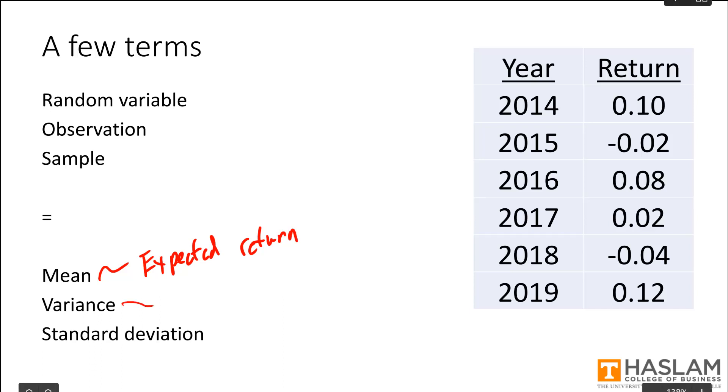Second, the variance. The variance is a measure of the dispersion of the various outcomes. So how far apart are they? Or in other words, how far are observations away from their expected value?